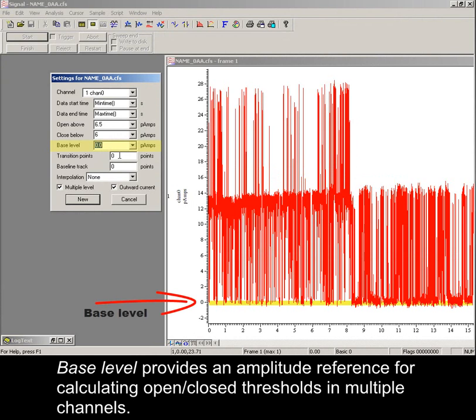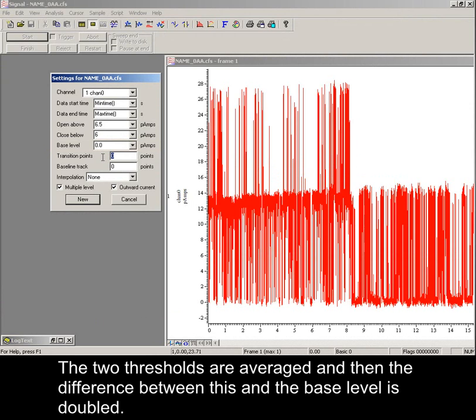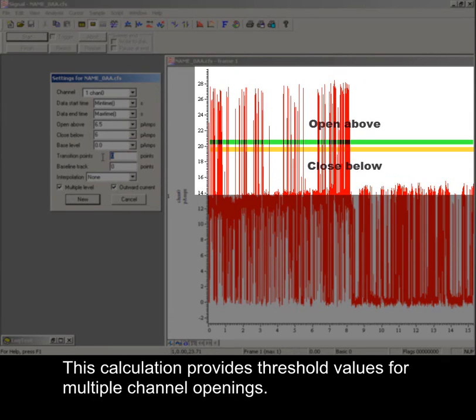Base level provides an amplitude reference for calculating open-closed thresholds in multiple channels. The two thresholds are averaged, and then the difference between this and the base level is doubled. This calculation provides threshold values for multiple channel openings.